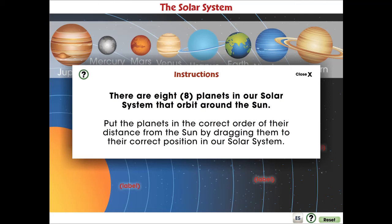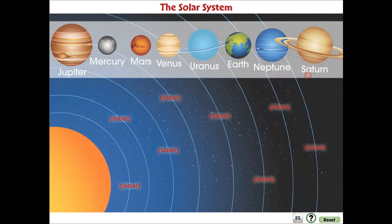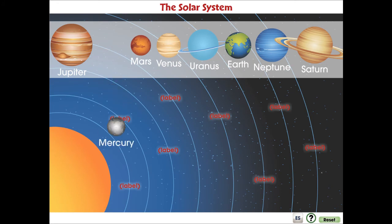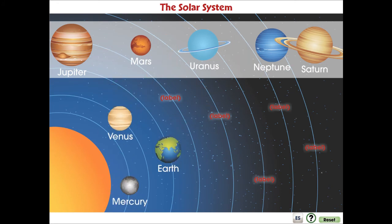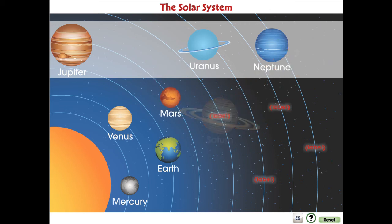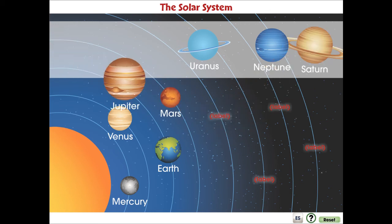In this Solar System Mini, students will learn the correct order of the planets in our solar system from their distance from the sun. Students drag the planets to their correct order on the diagram to reveal the planet rotations to scale.